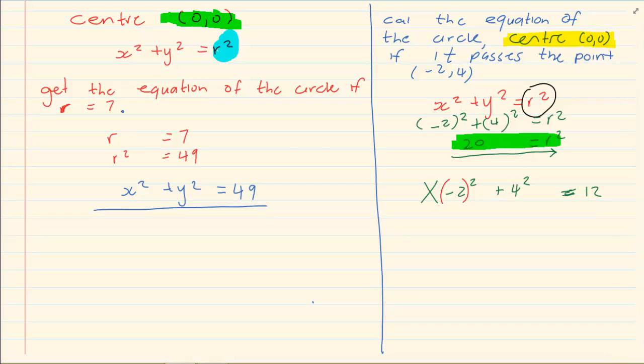Now the question is calculate the equation of the circle. So even though you have calculated that r squared is equal to 20, you have to rewrite it: x squared plus y squared is equal to 20, and that is answering the question. You have given them the equation of the circle.